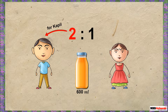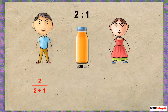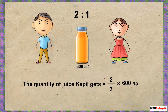The quantity of juice Couple gets is equal to the first term divided by the sum of both terms, multiplied by the whole quantity of juice. That is: 2 divided by (2 + 1), which equals 2/3, multiplied by 600 ml, giving 400 ml.